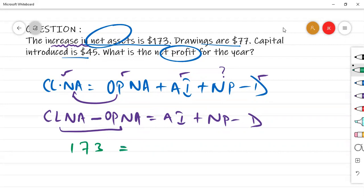How much is the additional contribution? That is 45. And in this way, you have to find out the net profit. And how much is the drawing? 77 dollars.